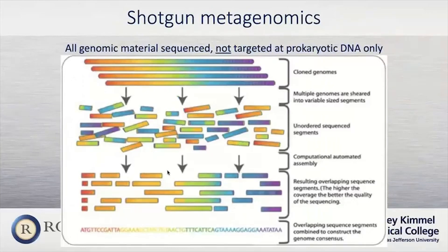The second method, shotgun metagenomics, is different in that all the genomic material present is sequenced. Prior to sequencing, a host DNA extraction kit is required to remove as much human DNA as possible. This is followed by fragmentation of the DNA, then sequencing of those fragments, followed by repeated fragmentation and repeated sequencing until you get contiguous overlapping segments. Those overlapping regions are then assembled using computer analytic programs and compared against a library of known organisms.